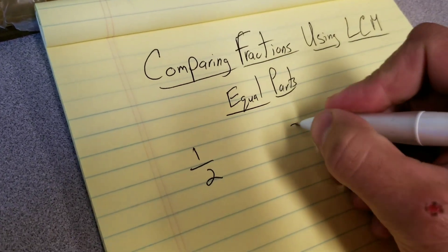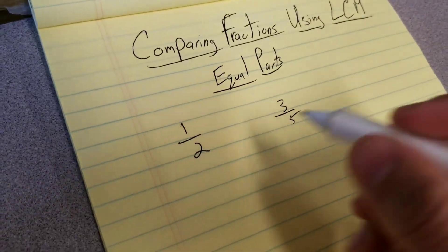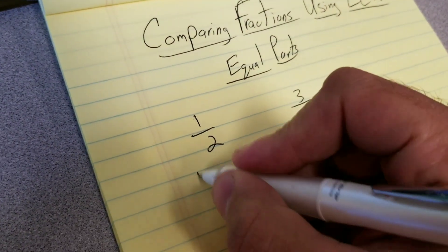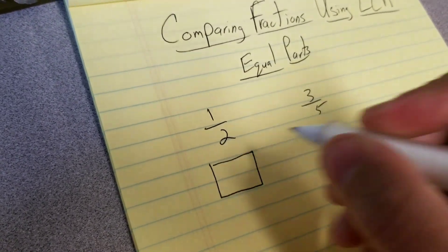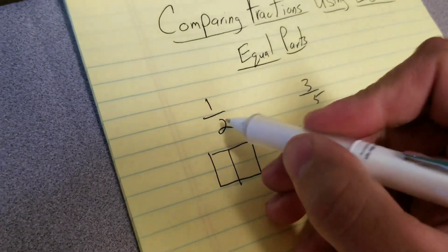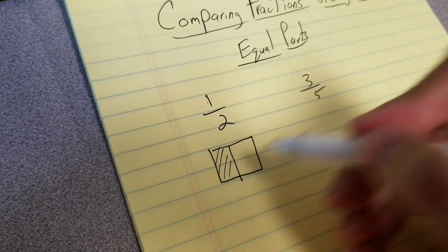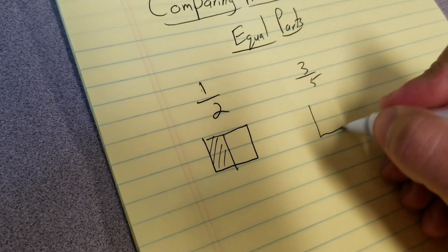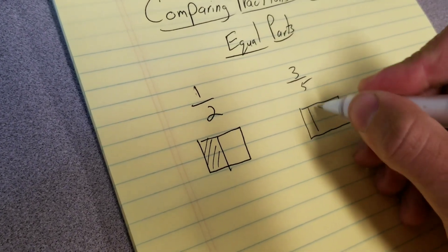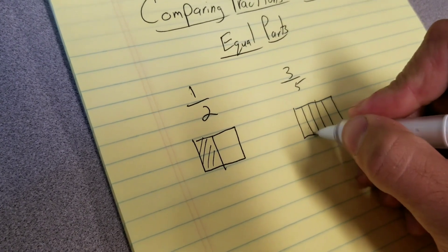What does that mean? Well, that means if our whole is split up into two equal pieces, we only have one of those pieces. And here, our whole is split up into five equal pieces, and we only have three of them.